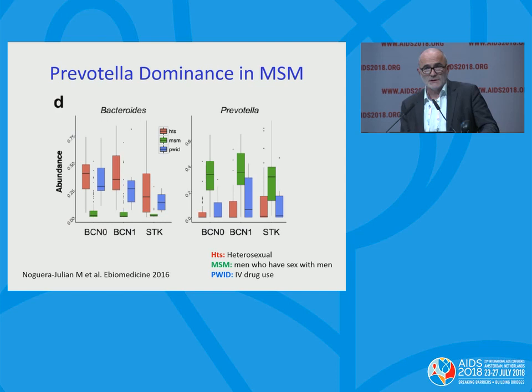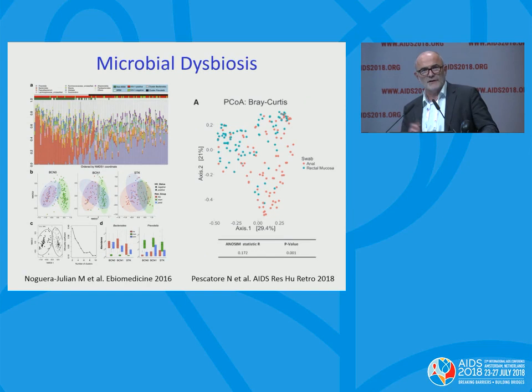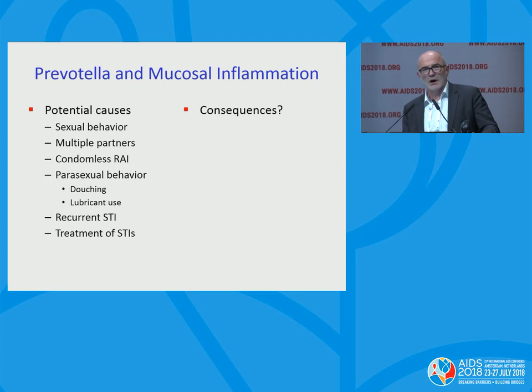Is this just an observation, or does it have any importance? One word of caution: Colleen Kelly's group in Atlanta verified these findings, but they went on to compare anal and rectal swabs, and some of these observations do seem to be linked to which site you sample. Why might we have this shift in microbiome? We don't know yet, but there are lots of potential causes: sexual behavior, multiple partners, parasexual behavior, recurrent STIs. Would having acquired this Prevotella-predominant microbiome increase your risk — say, for HIV acquisition? It's said to be pro-inflammatory.